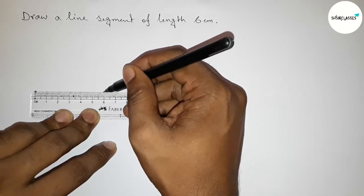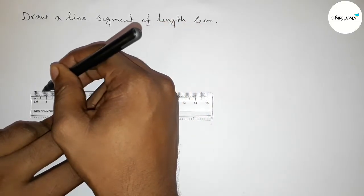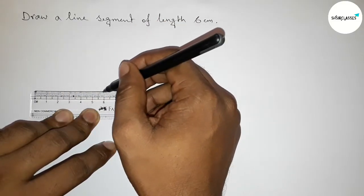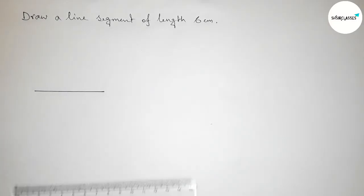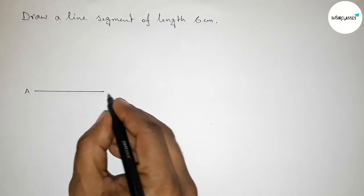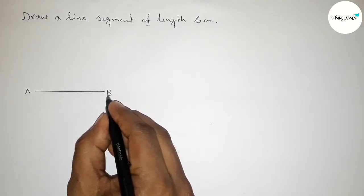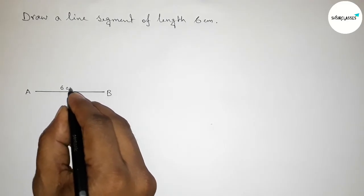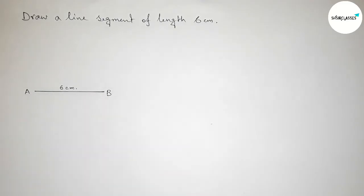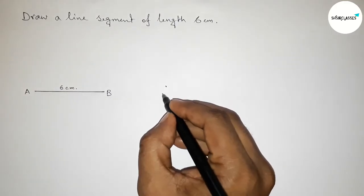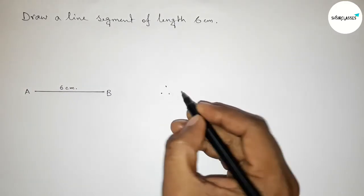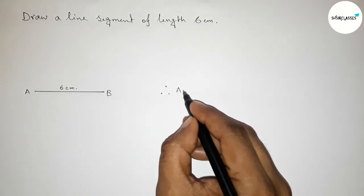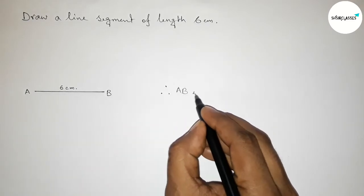Here taking point A and here B. So AB is a line segment of length 6 centimeter. Therefore we can say that AB is a line segment of length 6 centimeter and with the help of scale you can draw this line.